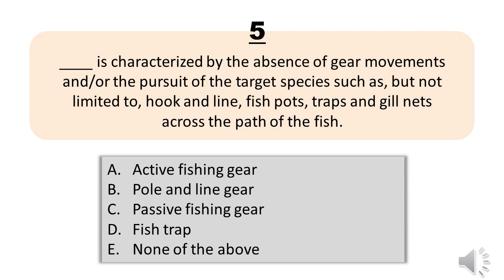Number 5. Blank is characterized by the absence of gear movements and/or the pursuit of the target species, such as but not limited to hook and line, fish pots, traps and gill nets across the path of the fish. A. Active fishing gear. B. Pole and line gear. C. Passive fishing gear. D. Fish trap. E. None of the above. The correct answer is Letter C. Passive fishing gear.